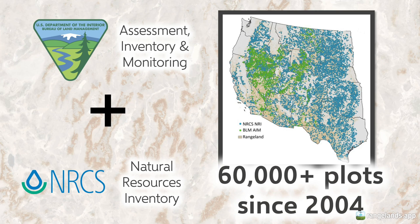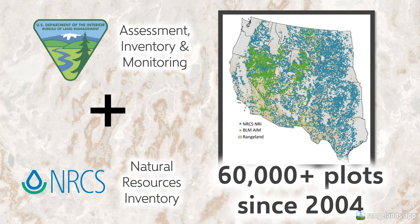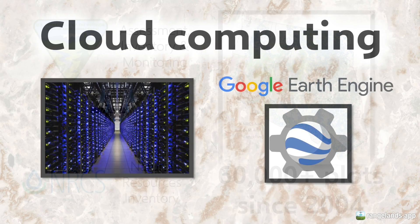60,000 plots and 9 million images is a lot of data to process, and for that reason we rely on our partners at Google, who produce the Google Earth Engine, which helps us to process all of that data.